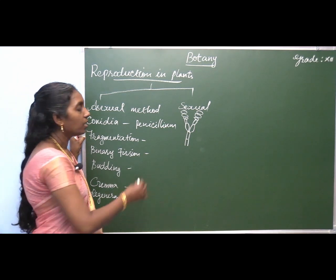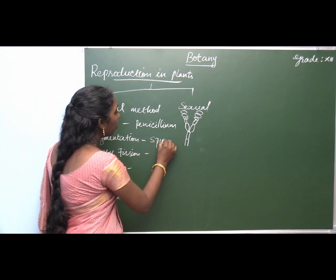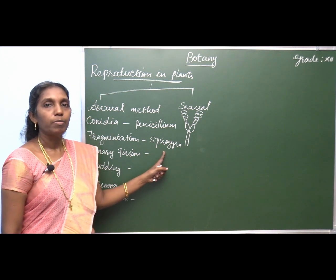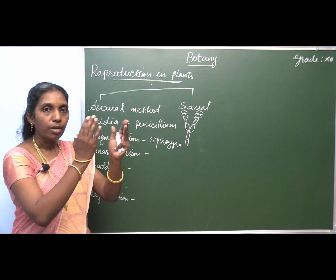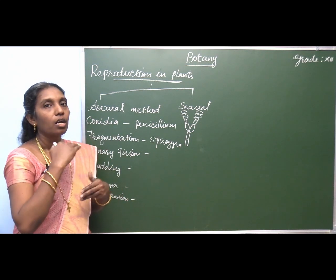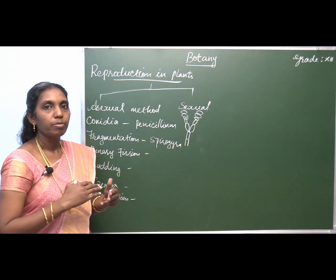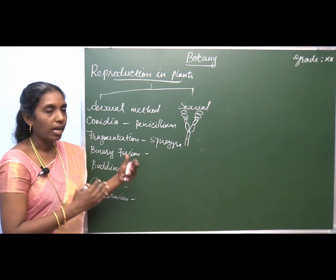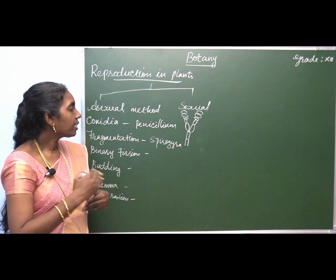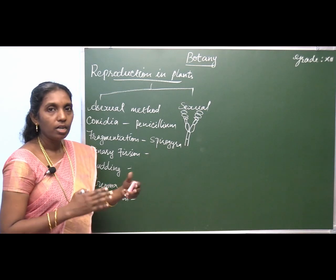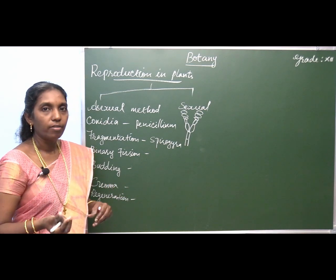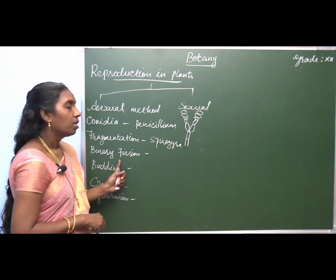Fragmentation — there is an alga called Spirogyra. Spirogyra is a filamentous alga. When this filamentous alga is accidentally detached or fragmented, the fragment — a simple bit of the thallus, which is the plant body of the alga — when detached from the parental one, has the ability to develop into the entire organism.